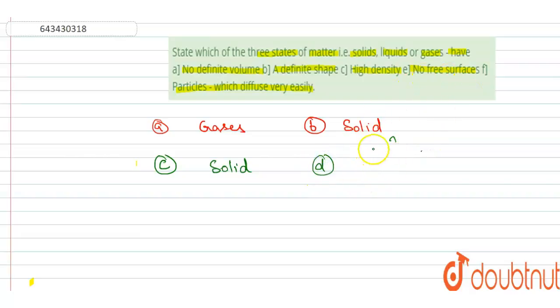So statement D is no free spaces. So we can see in solid there is no free space present between particles. Why? Because in the case of solid, the particles are very closely packed. That's why the space between them is very less.